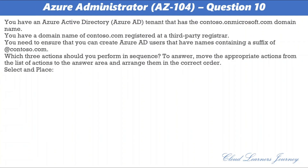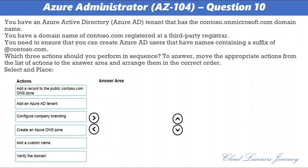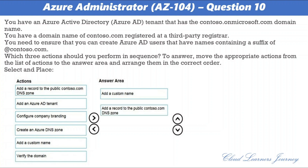Question number 10. You have an Azure Active Directory tenant named contester.onmicrosoft.com. You have a domain name of contester.com registered at a third-party registrar. You need to ensure that you can create Azure AD users with names containing a suffix of @contester.com. Which three actions should you perform in sequence? The correct answer is: first, add a custom domain name to your directory; second, add a DNS record to the public contester.com DNS zone at the domain name registrar; third, verify the custom domain name in Azure AD.